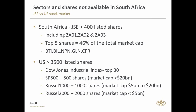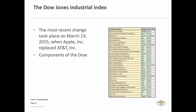The S&P 500 comprises just over 500 shares with market caps of over 20 billion dollars. Then there's the Russell 3000 index, split into the Russell 1000 — which covers 1,000 shares with market caps between 5 and 20 billion dollars — and the Russell 2000, also known as the small-cap index, comprising 2,000 shares with market caps smaller than 5 billion dollars.